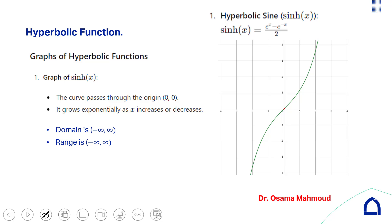The hyperbolic sine function is an odd function. From the graph it is symmetric with respect to the origin, confirming it is an odd function.